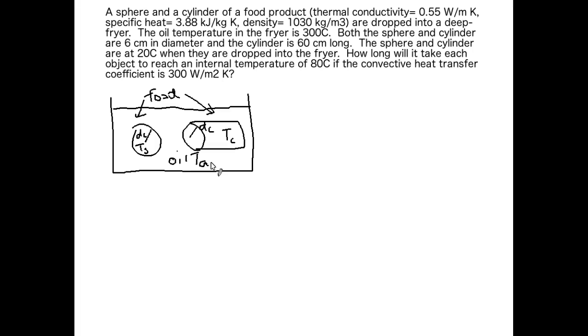There are several different equations for solving unsteady state heat transfer problems. First one is the unaccomplished temperature fraction, and that equation looks like this. In this equation, we're looking at how much temperature change still needs to be accomplished. TA is the fluid that's doing the heat transfer, TI is the initial temperature of your object, and T is the temperature of your object at time little t.